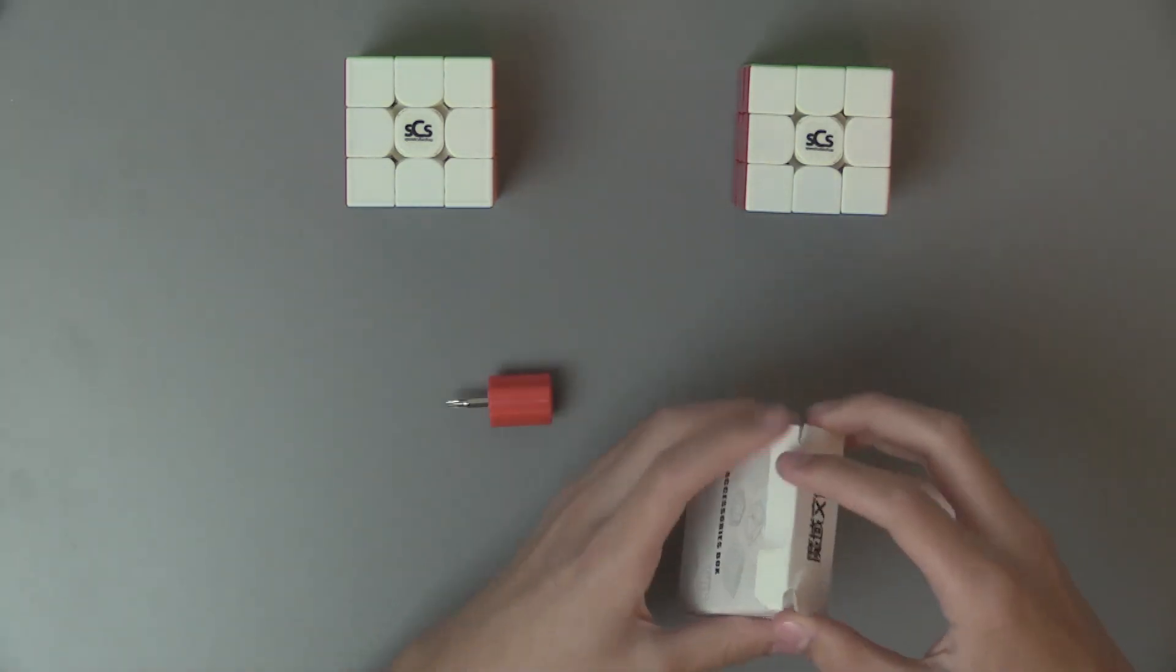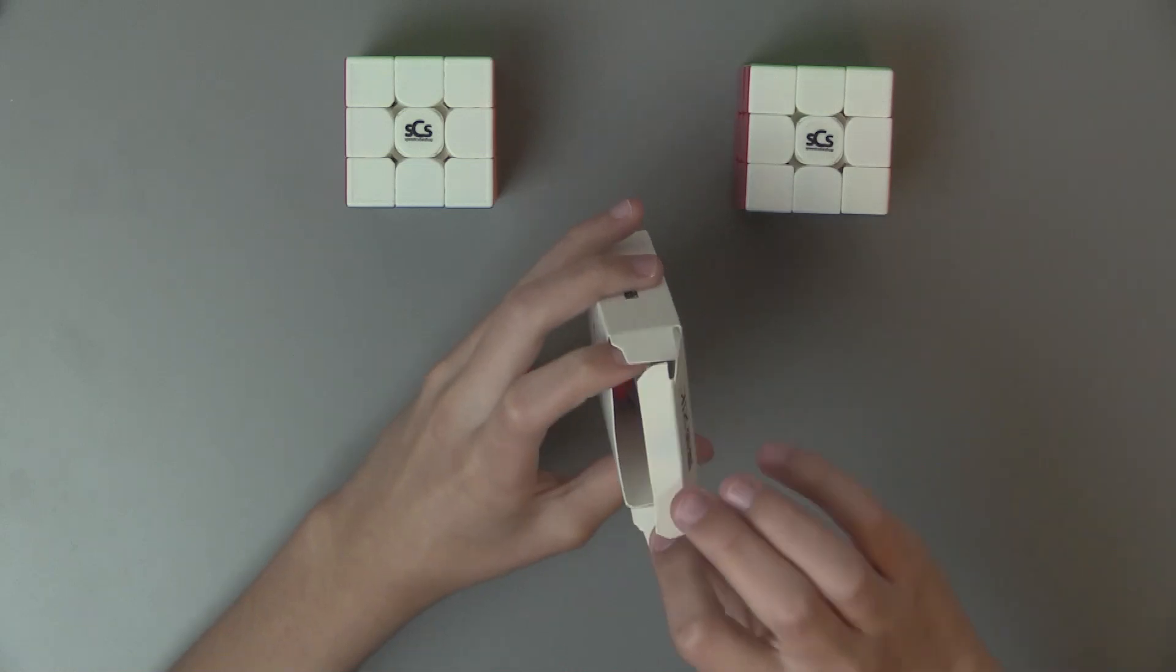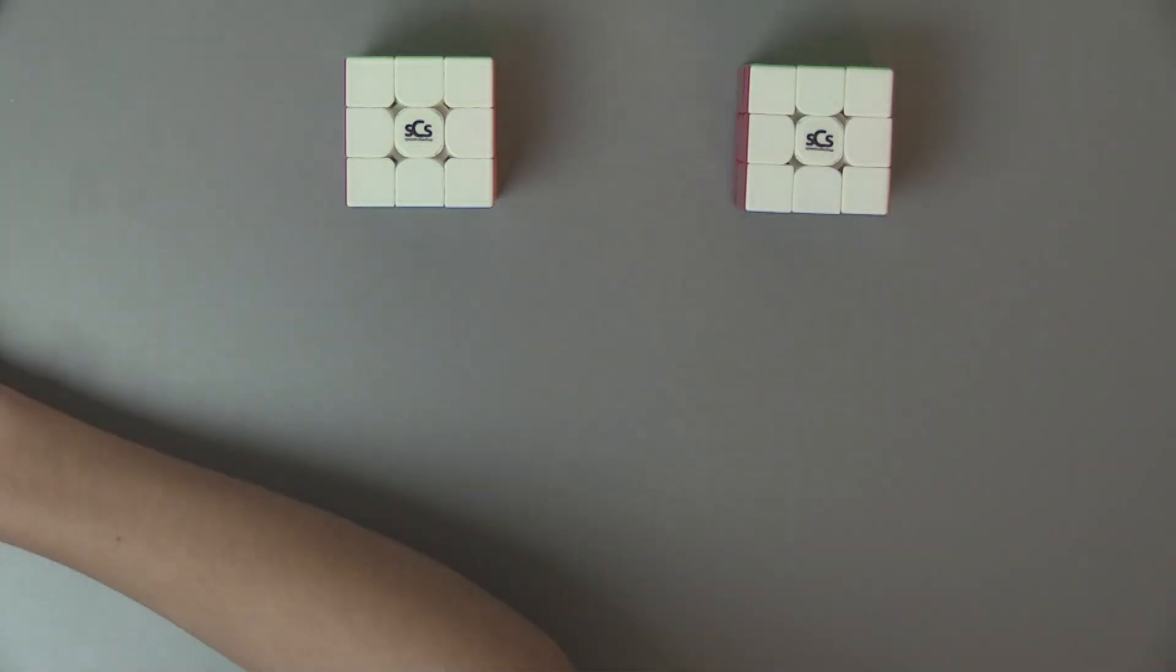And the GTS-3M comes with an extra screwdriver, then those same tensioning tools, and some extra magnets. I think the WRM kind of wins there, since it has extra stuff.